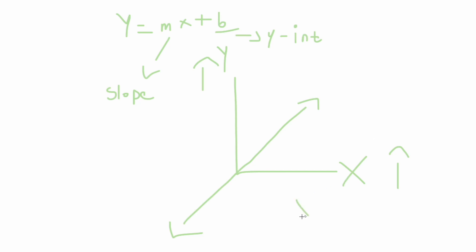So when x equals 0, what does y equal? That was a lot of information, so what I'm going to do now is show you an example of a linear line so you know what one looks like, and how to interpret the linear equation given if any is provided.